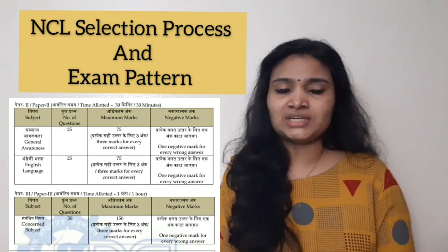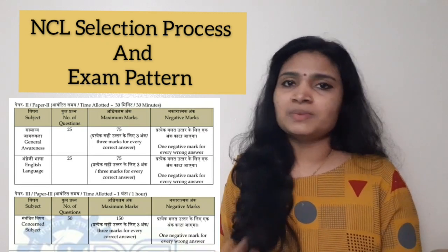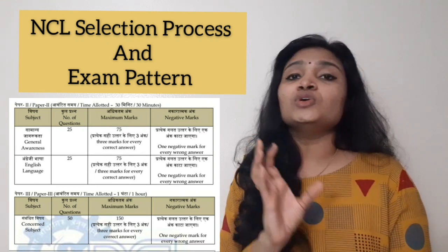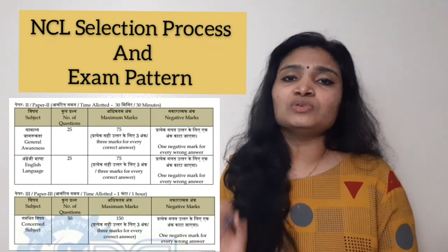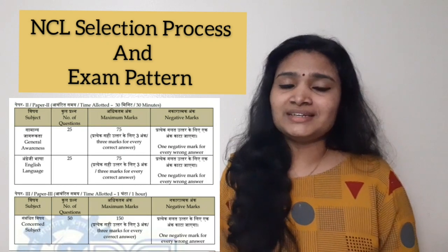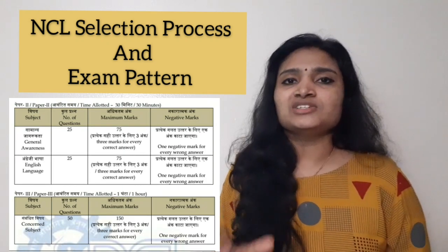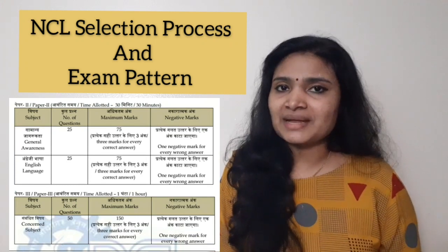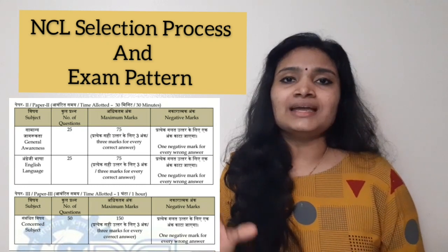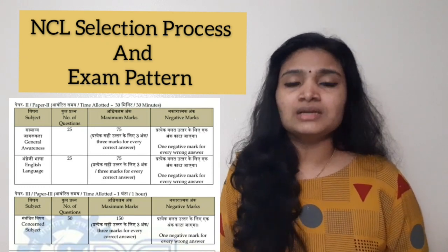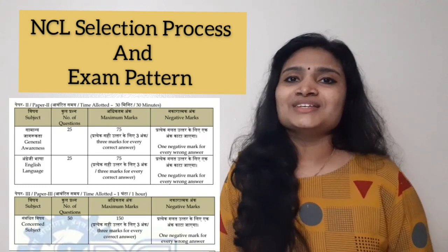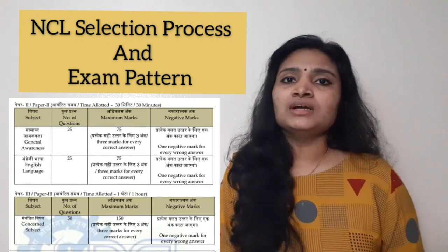For Technician Paper 3, candidates answer questions from their respective ITI subject. There are 50 questions worth 150 marks, three marks per correct answer, one mark deducted for wrong answers, and the time duration is one hour. That covers the paper details for Technical Officer, Technical Assistant, and Technician. If you are preparing for the NCL examination, prepare Paper 1, Paper 2, and Paper 3 in the areas and mark divisions described.